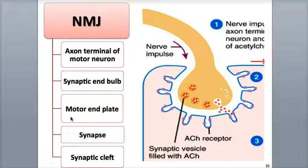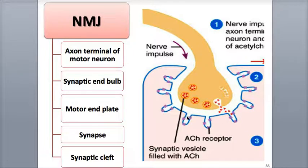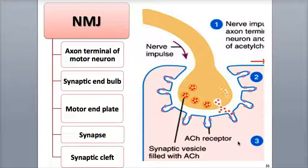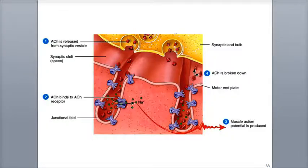At the other end of the synaptic cleft is the motor end plate. This is the part of the muscle fiber cell membrane that is part of the NMJ. There are tens of millions of integral membrane receptor proteins called acetylcholine receptors that bind to acetylcholine. The acetylcholine receptor proteins are actually ligand-gated ion channels that need two molecules of acetylcholine to bind to them in order to open up the channel. The motor end plate is folded and invaginated with deep grooves called junctional folds that create a large surface area for the acetylcholine receptors.